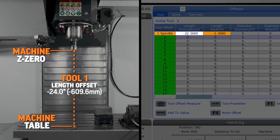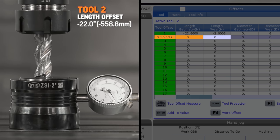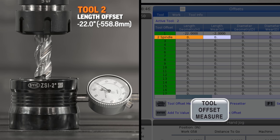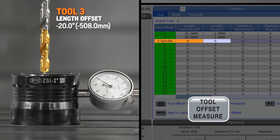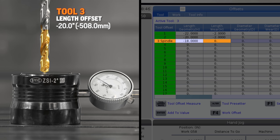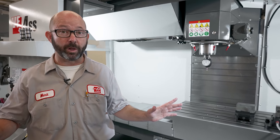We'll repeat this process for all of our tools. Tool two, tool offset measure, subtract our height gauge distance. Tool three, tool offset measure, and once again subtract our height gauge. Our machine knows where all of our tools are compared to their Z touch-off location, which was our machine table, but it doesn't know where our workpiece is.